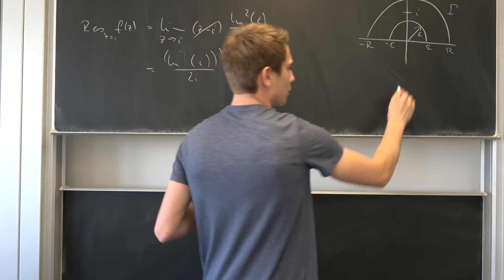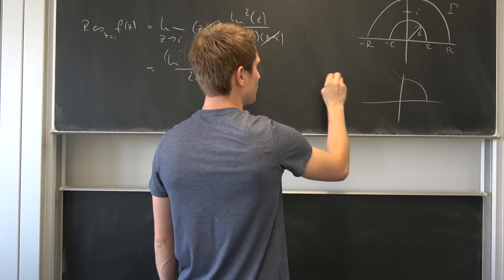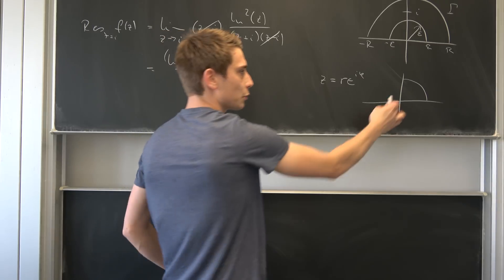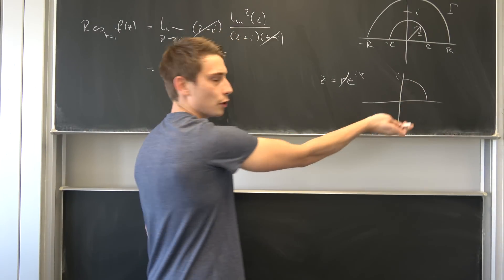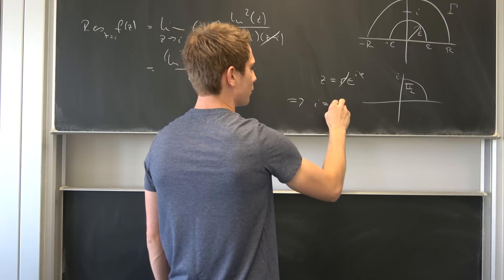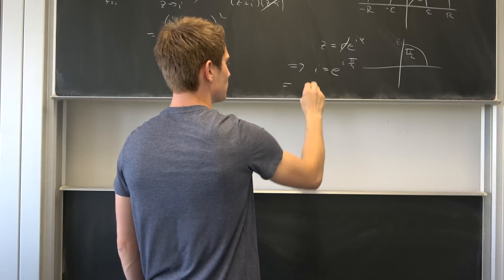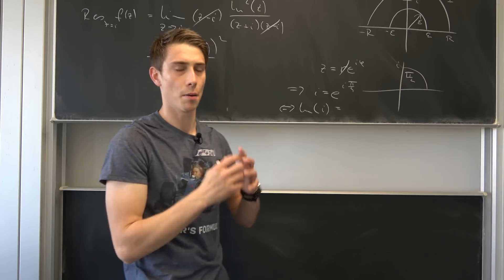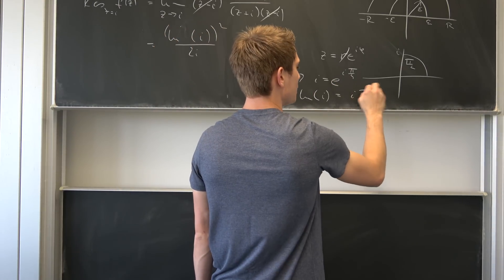What is the natural log of i? Well, if we take a look at the complex plane, i is up here. A complex number z is nothing but r times e to the i·φ, where r is the length of the vector. We are on the unit circle here, so r equals 1. And in order to get to i, we need an angle of π/2. So i equals e to the i·π/2, and taking the natural log on both sides — looking only at the principal branch — we get that the natural log of i is i times π/2.